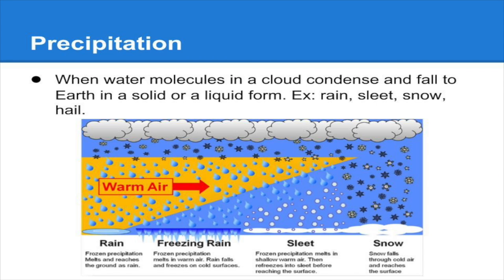When you have enough water molecules inside of a cloud and they become too heavy, they fall out of the cloud. Any type of water — whether it's solid, liquid, or somewhere in between — that falls out of the cloud is what we call precipitation.